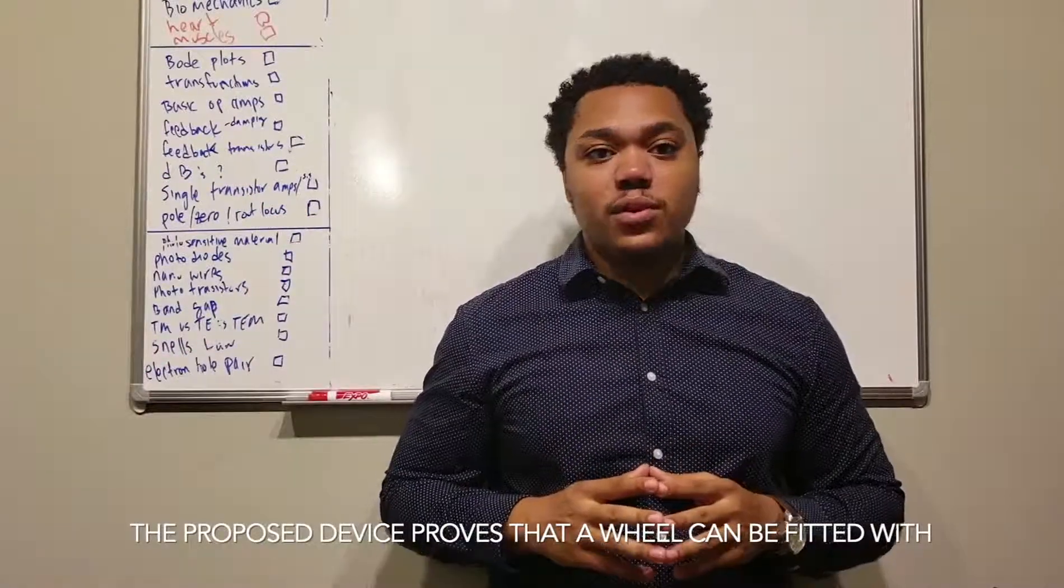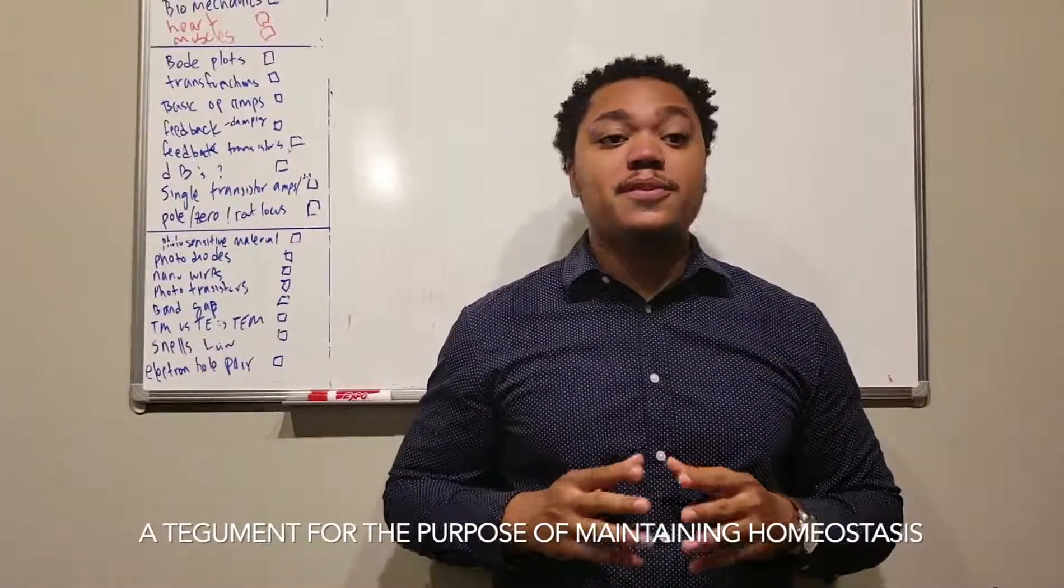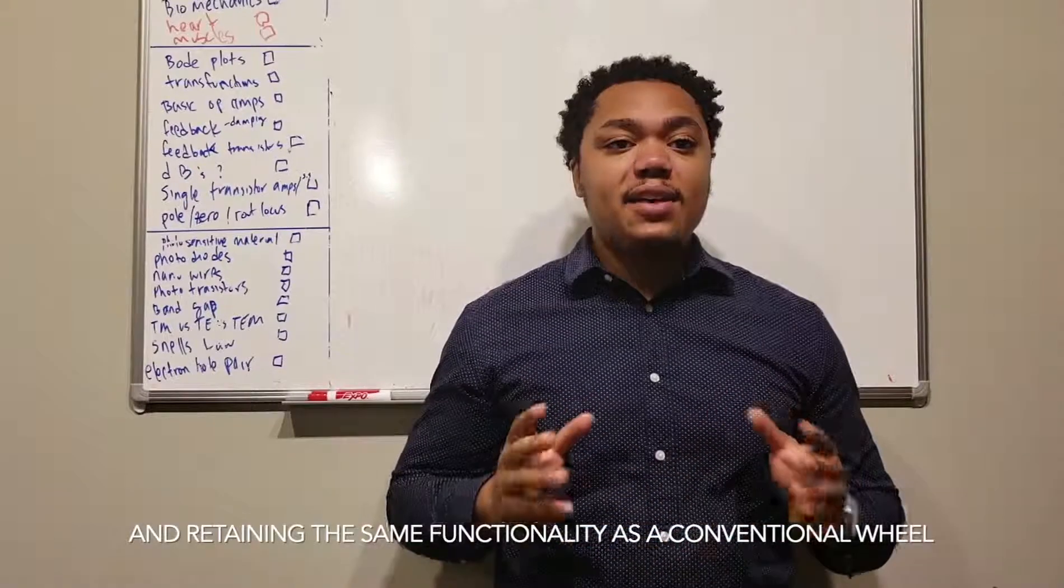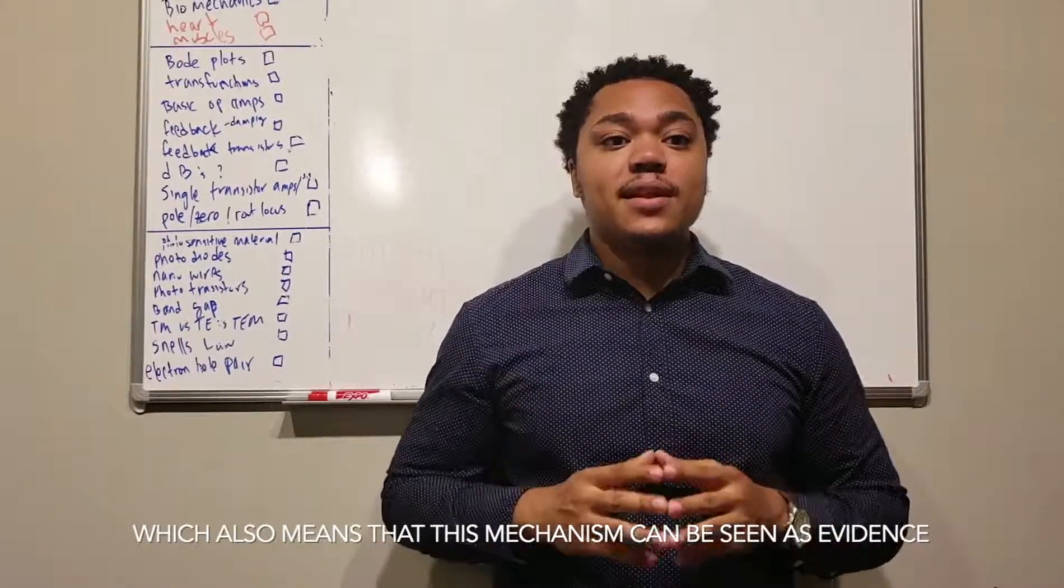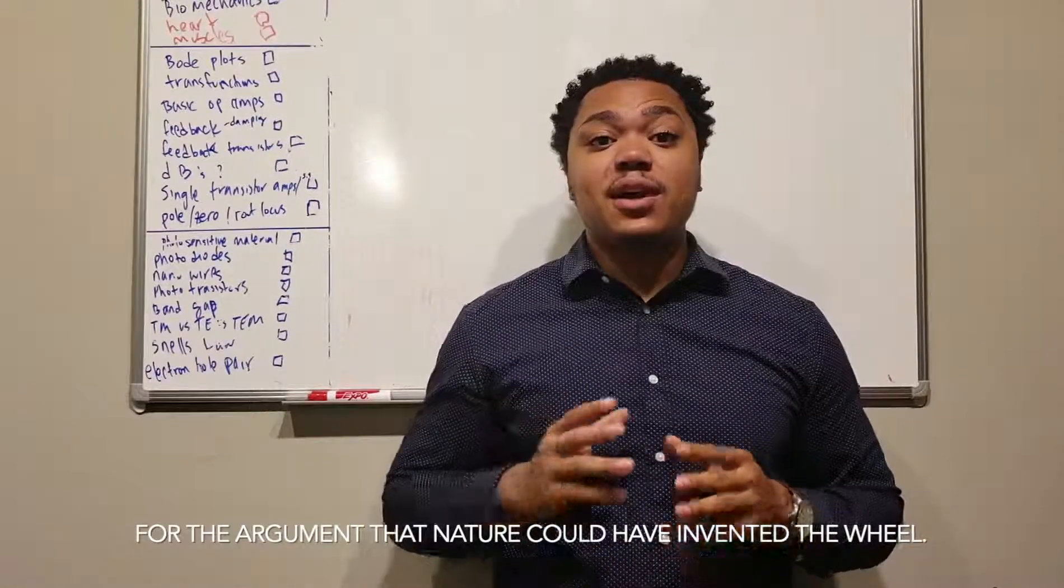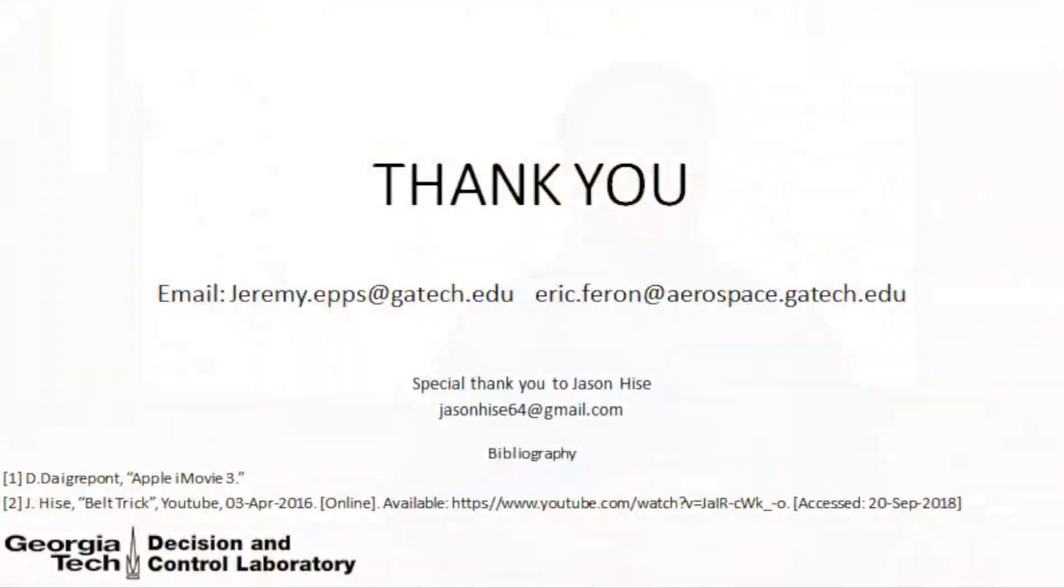The proposed device proves that a wheel can be fitted with a Tegumint for the purpose of maintaining homeostasis and retain the same functionality as a conventional wheel, which also means that this mechanism can be seen as evidence for the argument that nature could have invented the wheel. Thank you.